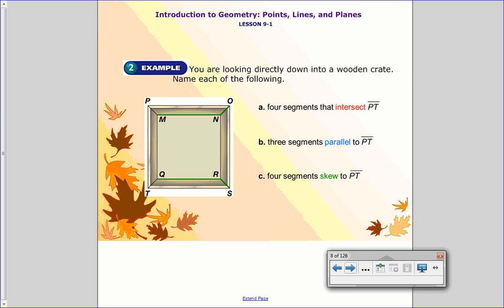So we're going to get started. You're looking directly down into a wooden crate. Name each of the following. So A says four segments that intersect line PT. I tell students, first, find the line you're talking about. So I'm talking about the line PT. I need to now come up with four segments that intersect it or meet this one. So I'm going to start looking. Well, it looks like OP intersects it. On this side I see MP. So segment MP. And then over here, TQ. And I need one more. Well, I'm going to do this one. Line segment ST. So all of those intersect that red line. They cross at one point.